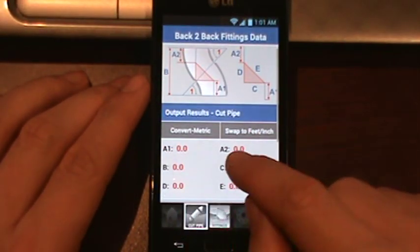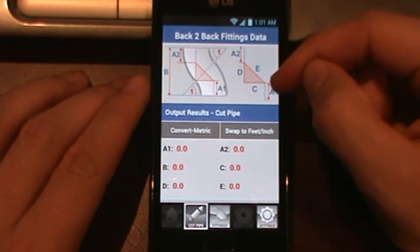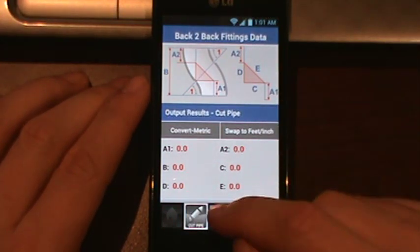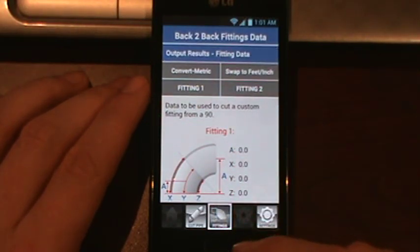As you can see here, you've got A1, A2, B, C, D, and E. And you can see how they correspond to the drawing. And then of course you have your fitting information so you can do a custom cut fitting if you need to.